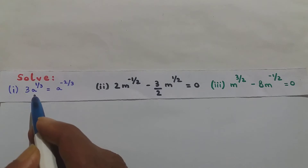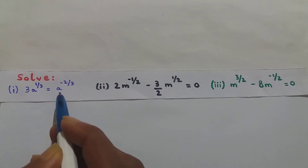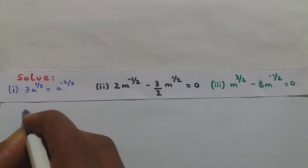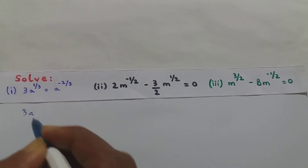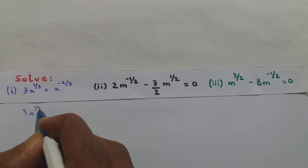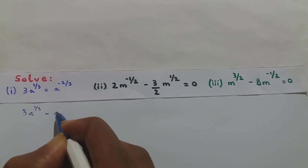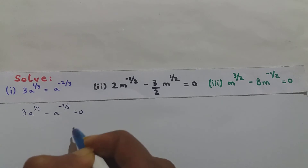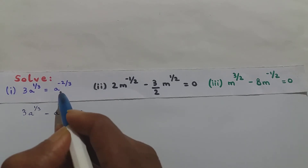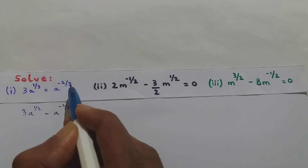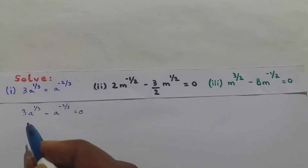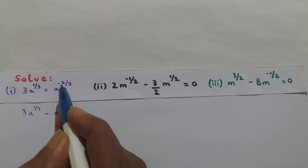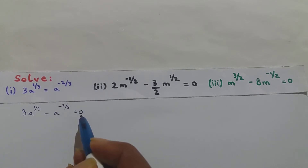Now 3a to the power 1/3 is equal to a to the power minus 2/3. I can rewrite this equation as 3a to the power 1/3 minus a to the power minus 2/3 equals 0. What I have done is shifted a to the power minus 2/3 to the left hand side, so it becomes 3a to the power 1/3 minus a to the power minus 2/3 equals 0.